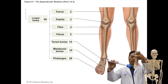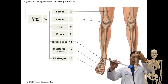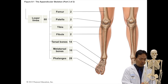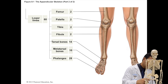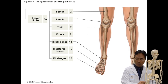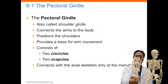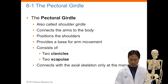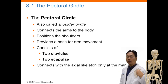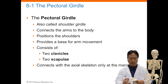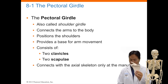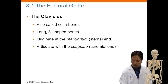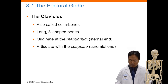The metatarsal bones — there are five in each foot — basically provide the arch of the foot, determining whether you are flat-footed or high-arched. The phalanges include about 14 bones inside a single foot, covering all the bones of the toes. The pectoral girdle, known as the shoulder girdle, connects your arms to the body. It positions your shoulders and provides a base for arm movement, made up of your clavicle and the scapula, which connects to the entire axial skeleton only at the manubrium.